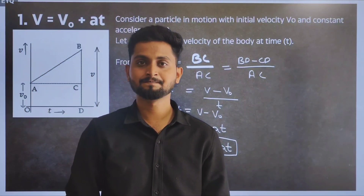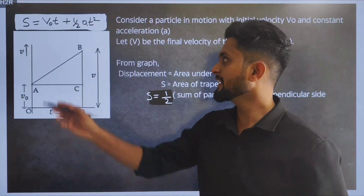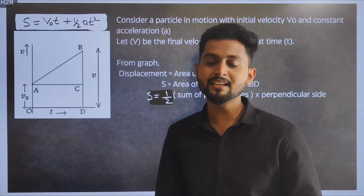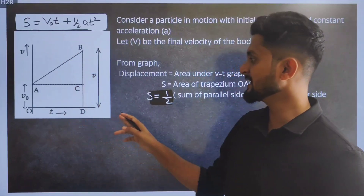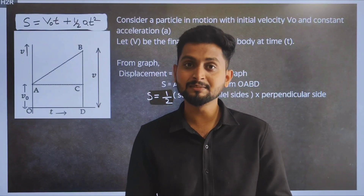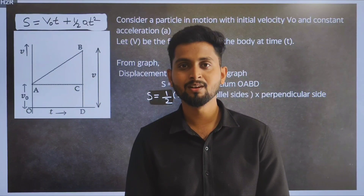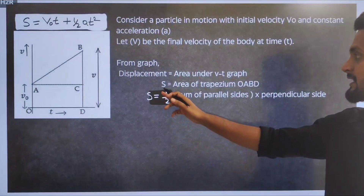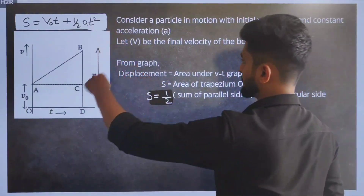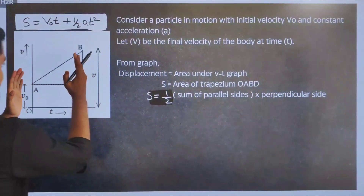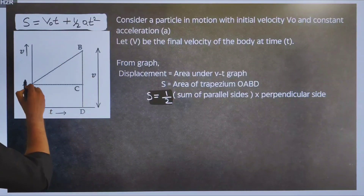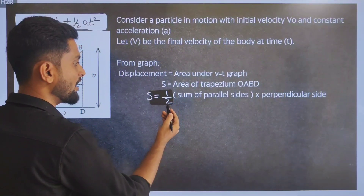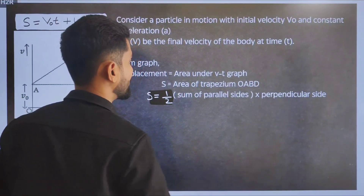The second kinematic equation is S = V₀T + ½AT². We are going to find displacement from the velocity-time graph. The area under the velocity-time graph gives displacement. We need to find the area of the trapezium shape formed. The area of a trapezium formula is: half times the sum of the parallel sides times the perpendicular distance between them.